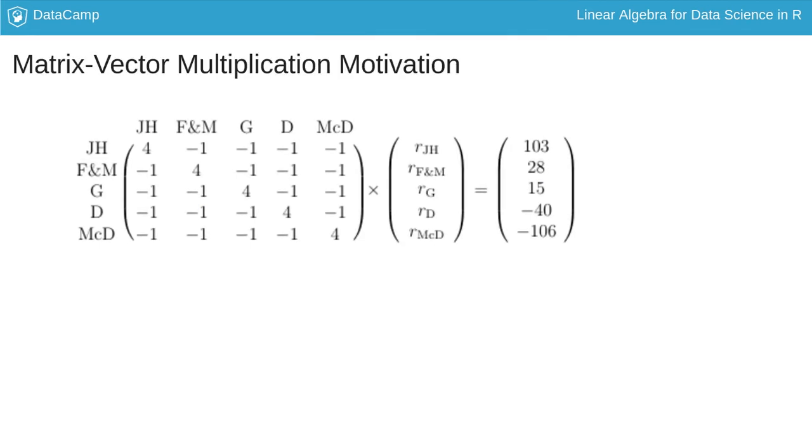Such a table can be put into a matrix that has the pairwise interactions between all the teams. For example, in this situation team JH for Johns Hopkins has played four games, one each against the other four teams. Hence the four in the one one element of the matrix and a negative one in each of the remaining elements of the row and column in which it resides.